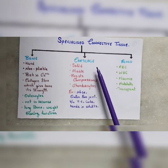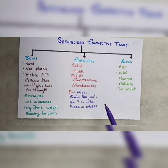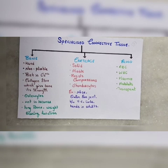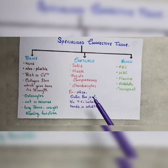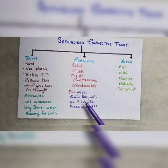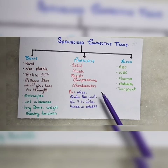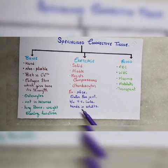Next is cartilage. Cartilage is solid and pliable — pliable means flexible. Cartilage can resist compression and is strong. It is formed from cells called chondrocytes embedded in the matrix.